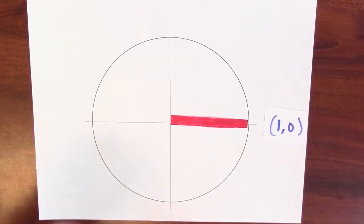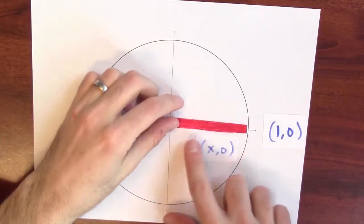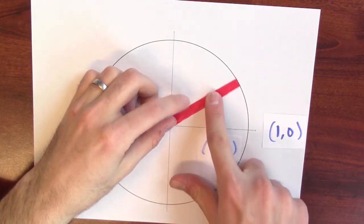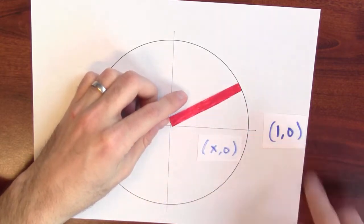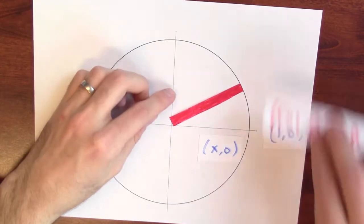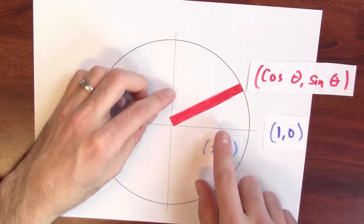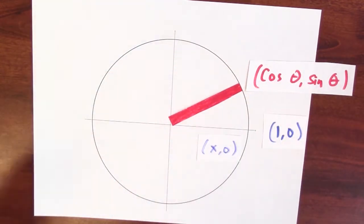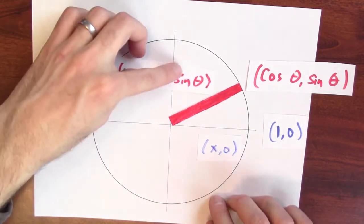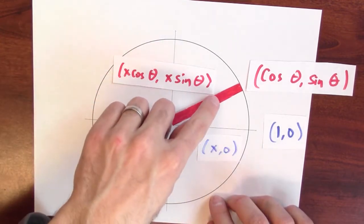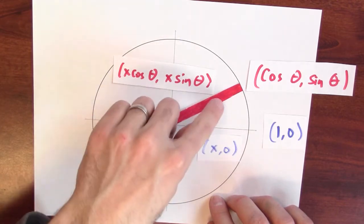What if I rotate some other point, (x, 0)? If x is some number between 0 and 1, I just think about where (1, 0) goes. (1, 0) rotated to (cosine theta, sine theta), so (x, 0) must rotate to (x cosine theta, x sine theta) — a point on the middle of this red line.